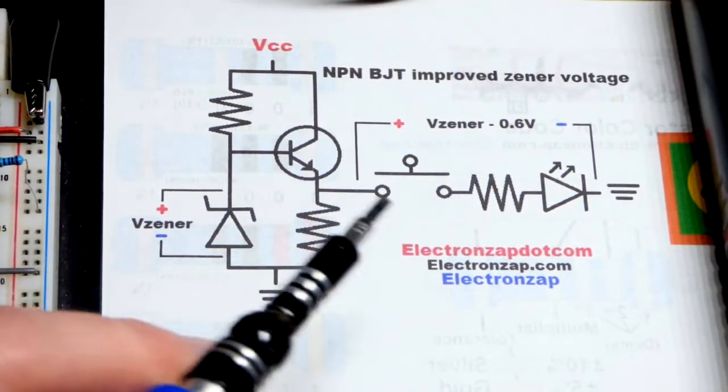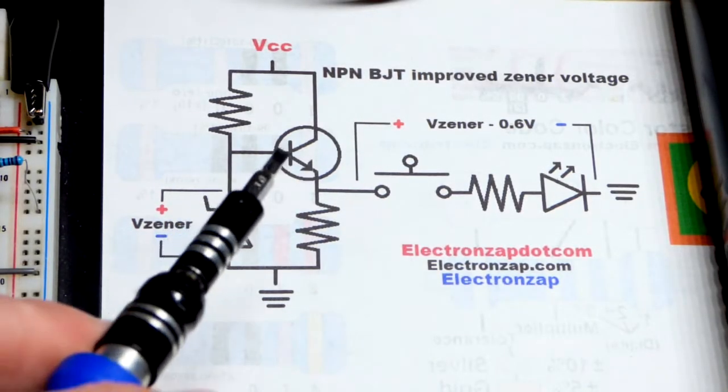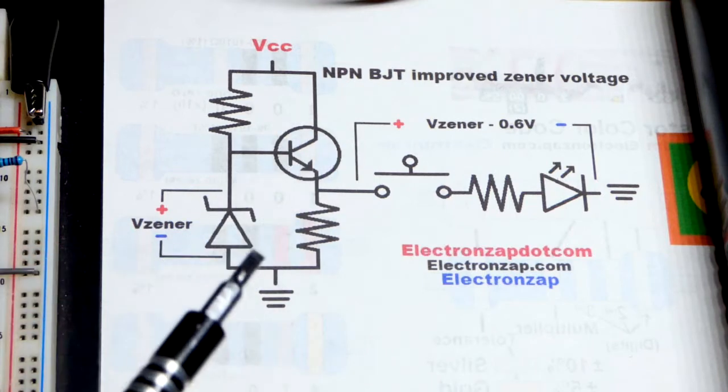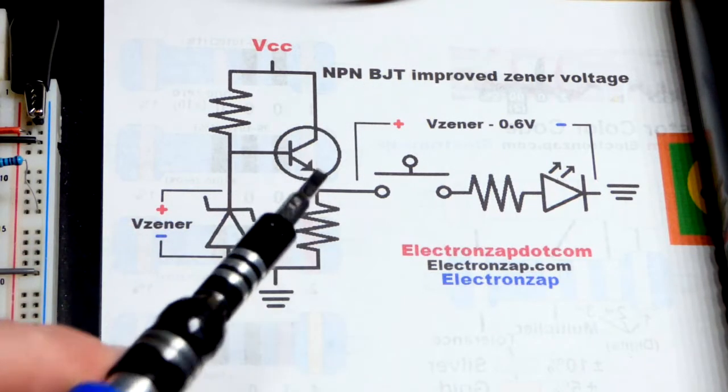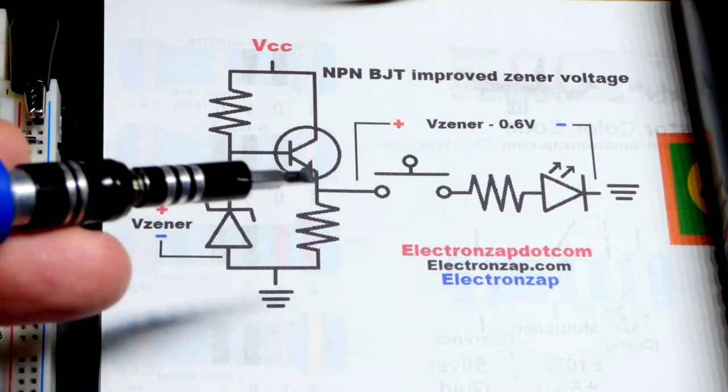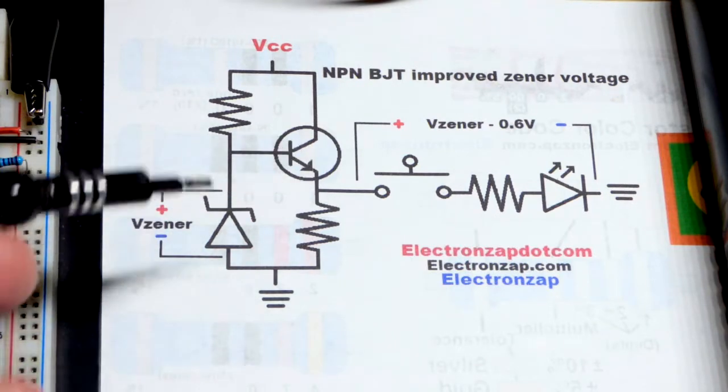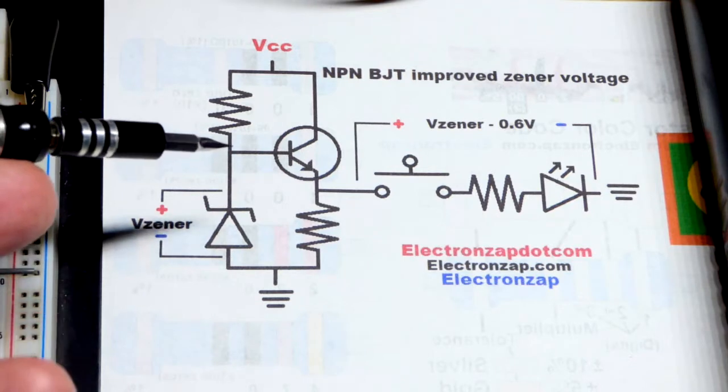Now in the last video we looked at this circuit and the nice thing about this circuit is we have an emitter follower here using the NPN bipolar junction transistor. I'm using the 2N2222 but the exact one doesn't matter, though the pin layout may be different. We covered that in the last video.